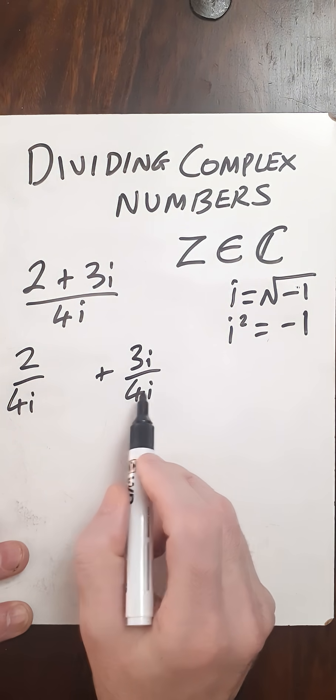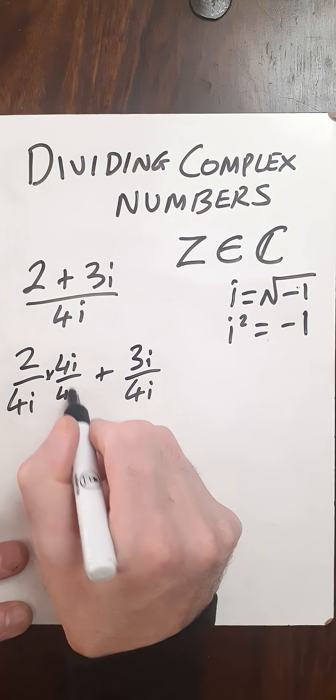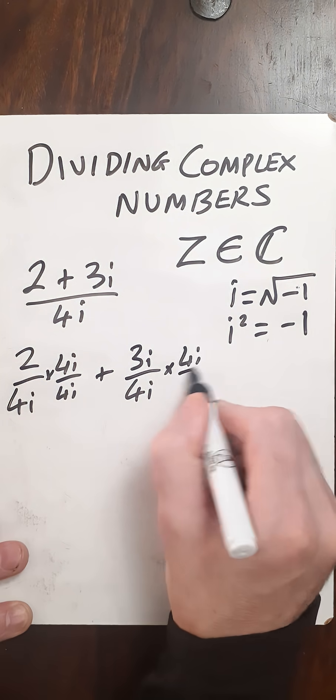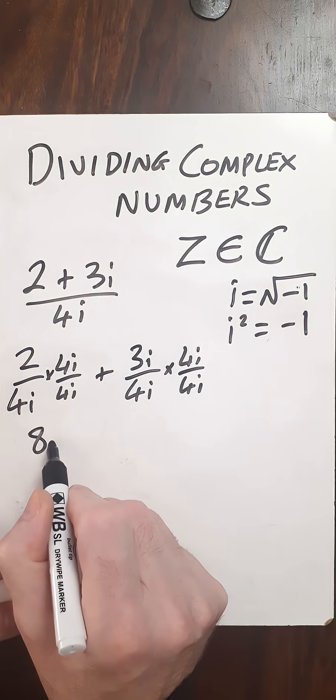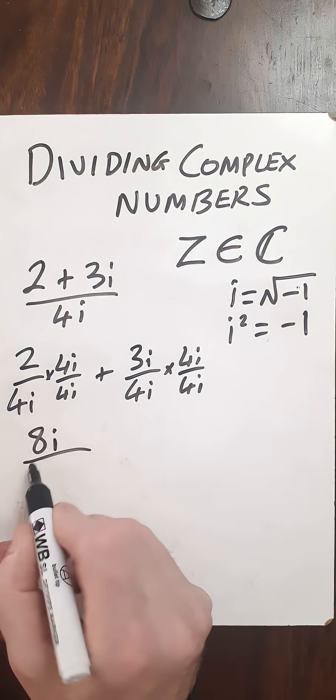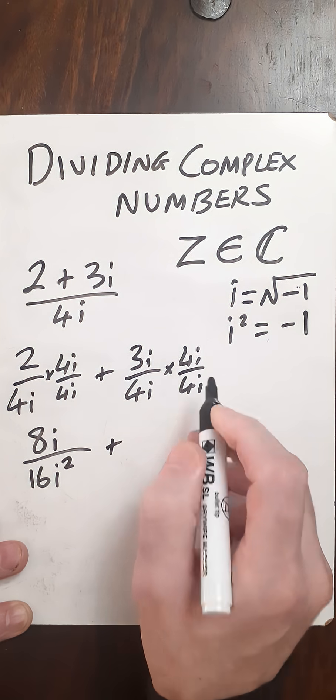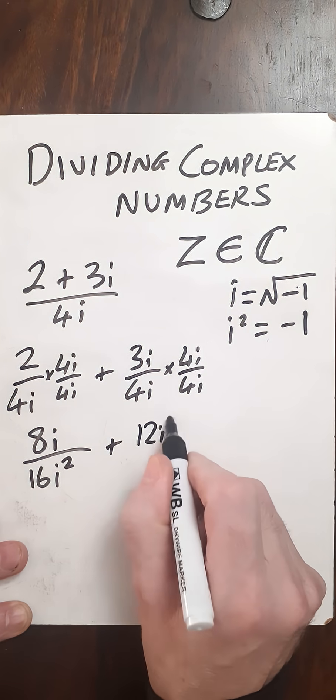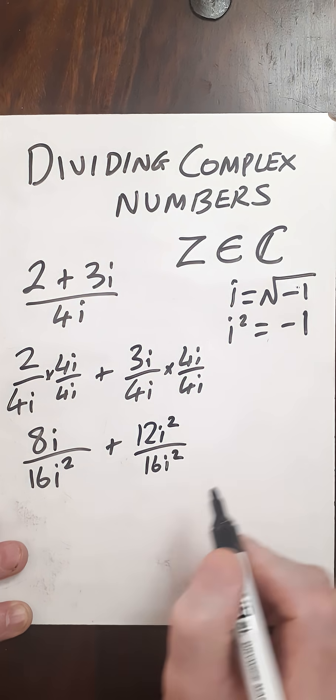Now with the denominator being an imaginary part, I'm going to multiply by 4i over 4i on both terms. Numerator on the left hand side becomes 2 times 4 is 8i, 4 times 4 is 16, and i squared. And then on the right hand side, 3i times 4i gives me 12i squared, 4i times 4i gives me 16i squared.